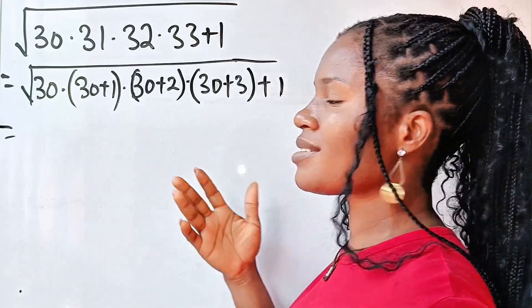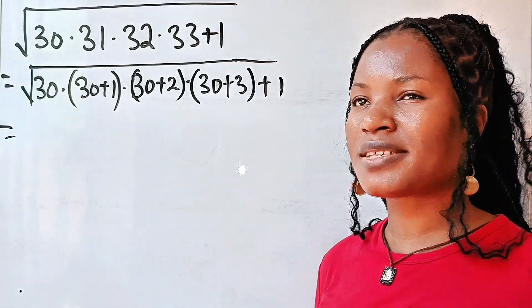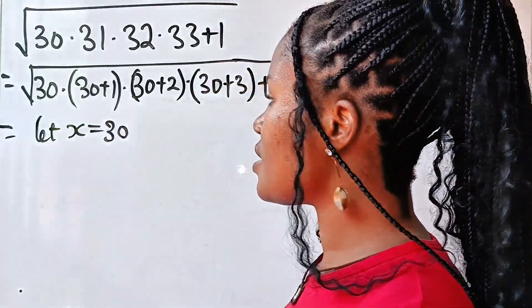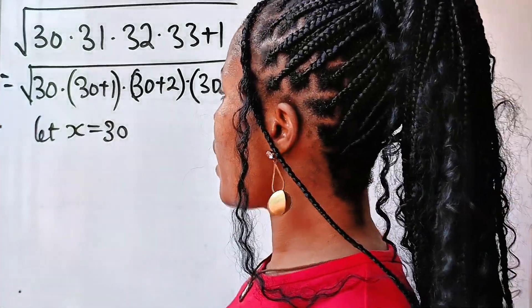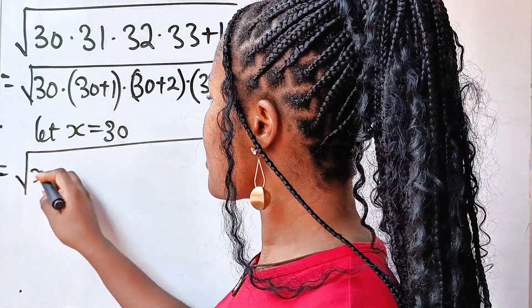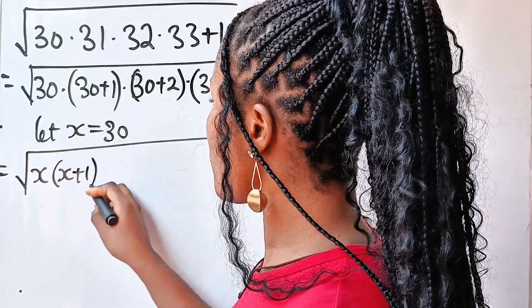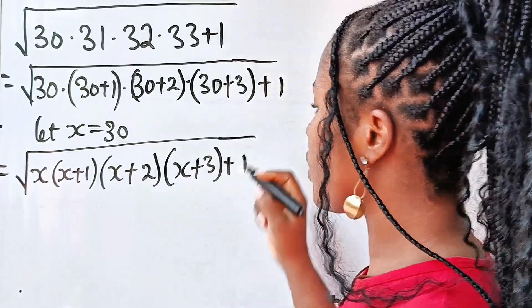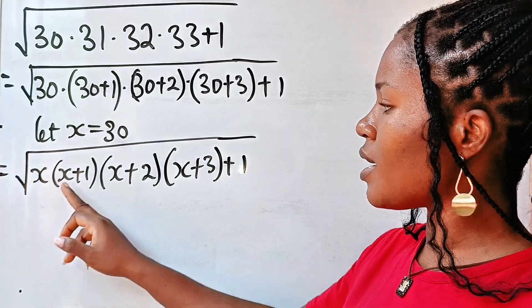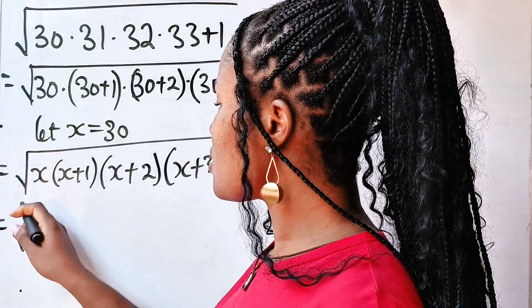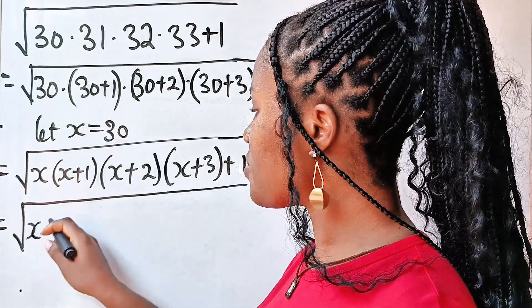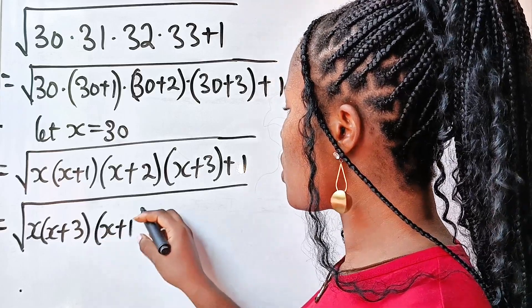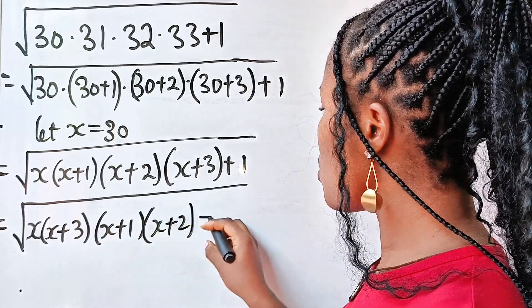This is equal to, because we have 30, 30, 30, let's just simplify it further and say let 30 be equal to x. So we say let x be equal to 30. So anywhere we see 30, now we substitute our x. So we have this to be equal to the square root of x multiplied by x plus 1 multiplied by x plus 2 multiplied by x plus 3 plus 1. Now, let me bring this to this side and then shift the other ones. You are going to see why soon. So we have the square root of x multiplied by, let's bring this first, x plus 3. Then, multiply by x plus 1 multiplied by x plus 2 plus 1.